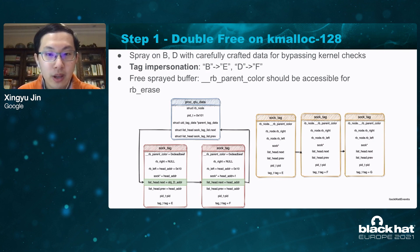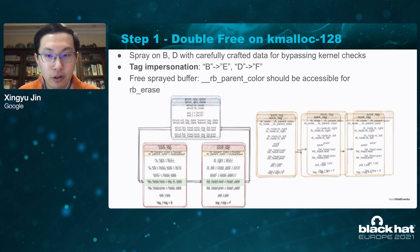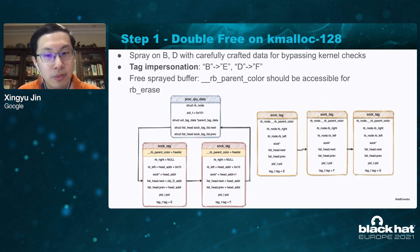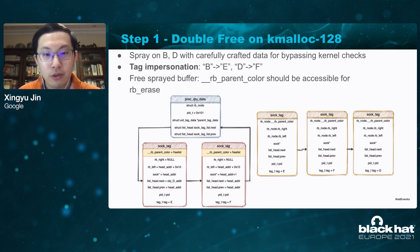We also have to free these two crafted objects because the first eight bytes of the objects must be a valid address for the IP erase operation. This way, we may free the crafted soc_tag structures without triggering any kernel checks. We will later use these primitives for performing a special double free.